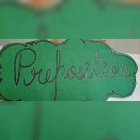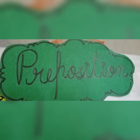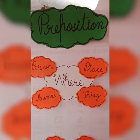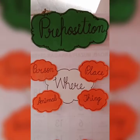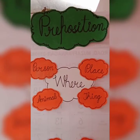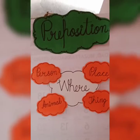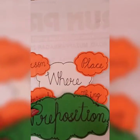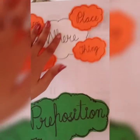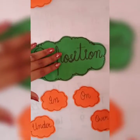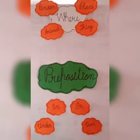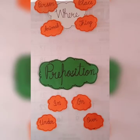A preposition is a word that tells us where a person, a place, an animal or a thing is. Some examples of prepositions are: on, in, under, and over.